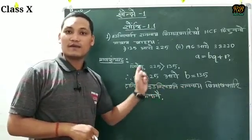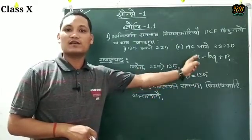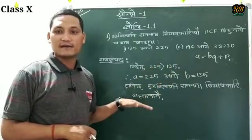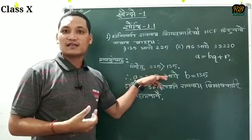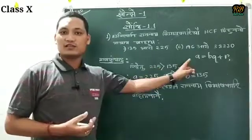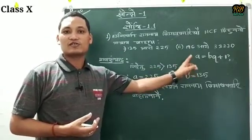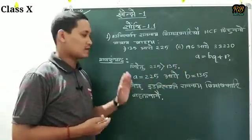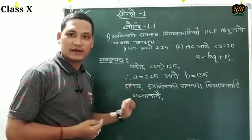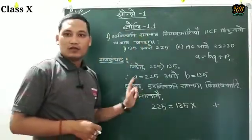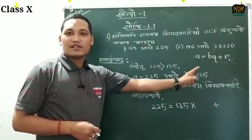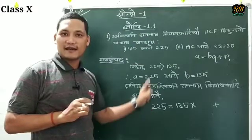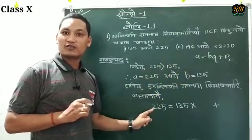The formula of Euclid is a equals to bq plus r. This is step by step. The value of A equals to bq — A is 225.